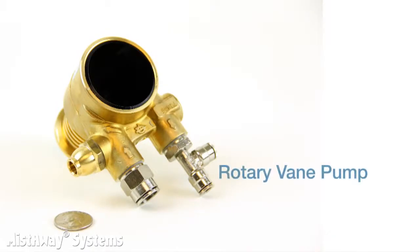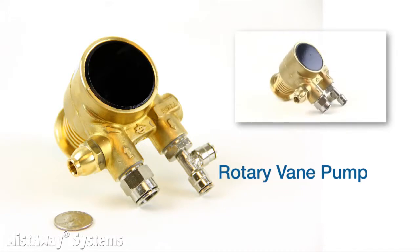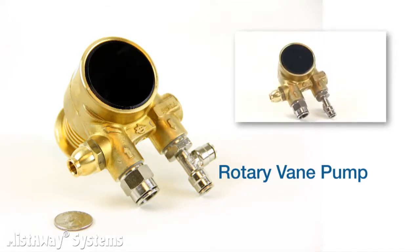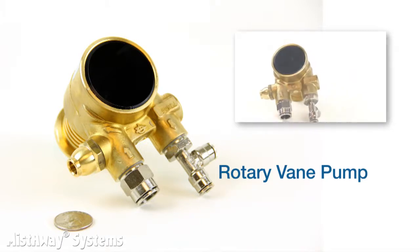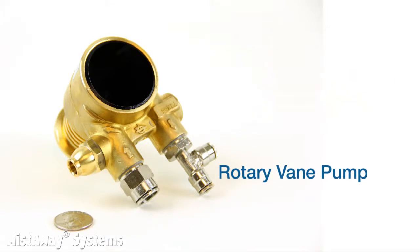Let's take a closer look at each of those, starting with the pump. MistAway's systems use what is called a rotary vane pump. You can see that it is about the size of your fist, and it weighs about two pounds. It has a generally cylindrical shape and is made from brass.